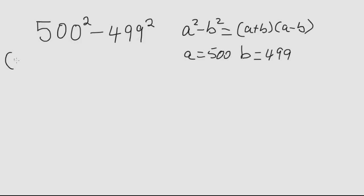So rewriting this, we get 500 plus 499 times 500 minus 499. Well, this adds up to 999.